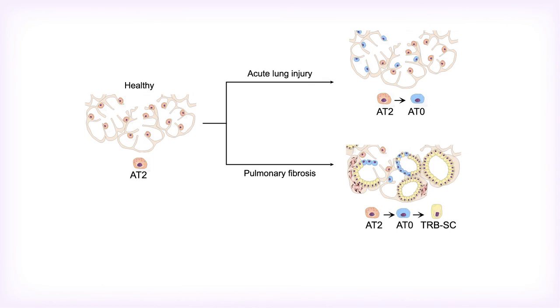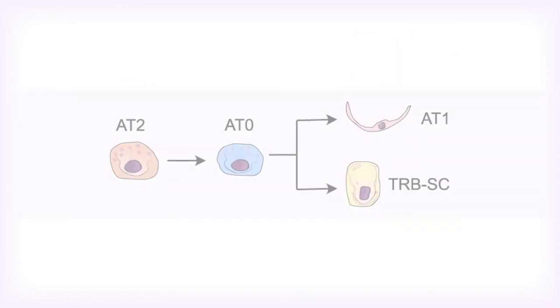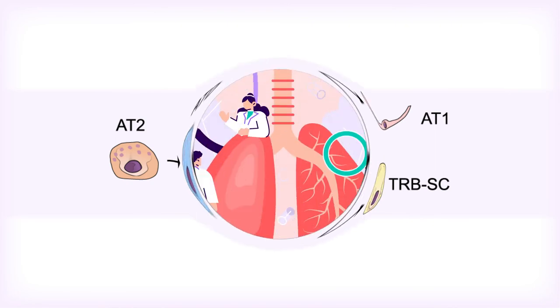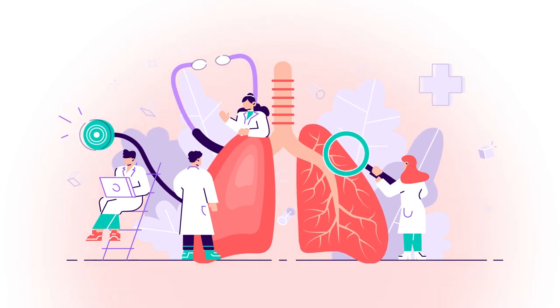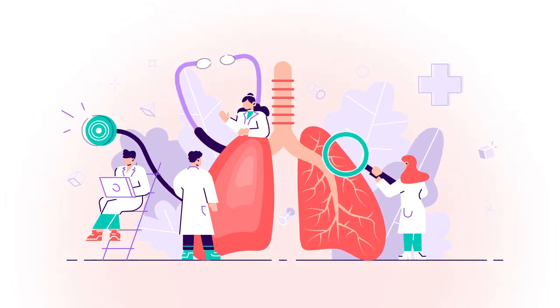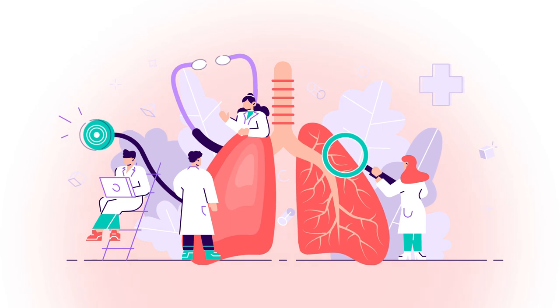More work is needed to determine the genetic machinery that controls how human AT0s differentiate into AT1s and TRBSCs. As genome editing tools and large animal models become more available, scientists will be able to continue their exploration of the lungs with unprecedented resolution.